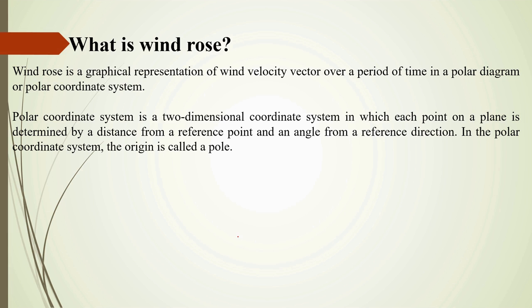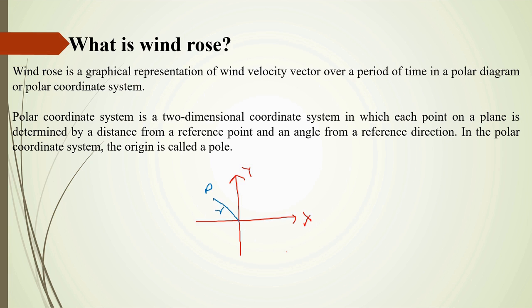So the polar coordinates of the point are called r and theta. If I illustrate it here: this is my x-axis and this is the y-axis. I will find this distance. My point is P. The distance from the origin to P is r, and the angle between this axis and this line is theta. So the polar coordinates of the point P will be r, theta.